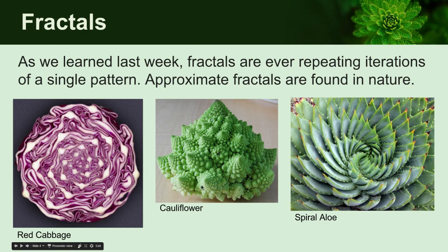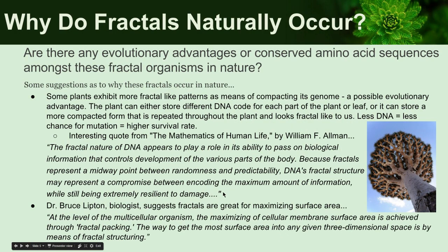The same goes for this cauliflower. These little mounds get smaller and smaller, but if you look at the whole shape of the cauliflower, it's just one giant version of those mounds — very interesting fractal-like patterns. And the spiral aloe here shows more of a spiral but also has some fractal-like patterns. So ever-repeating iterations of a single pattern can be found in nature.